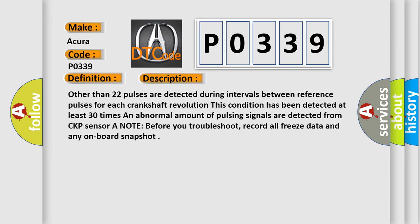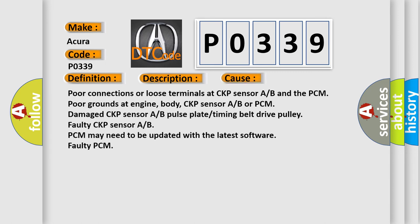This diagnostic error occurs most often in these cases: Poor connections or loose terminals at CKP Sensor A/B and the PCM, poor grounds at engine, body, CKP Sensor A/B or PCM, damaged CKP Sensor A/B pulse plate/timing belt drive pulley, faulty CKP Sensor A/B, PCM may need to be updated with the latest software, faulty PCM.